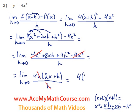So we have 4 times 2x plus 0. 2x plus 0 is just 2x, and 2x times 4 is 8x. So this is the derivative of y equals 4x squared.